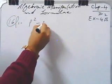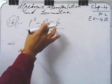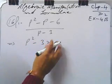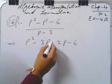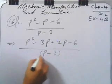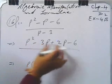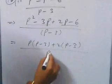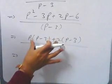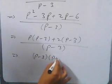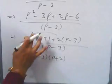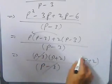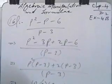Question number 16: (p² - p - 6) divided by (p - 3). Factorize the quadratic p² - p - 6. We need two numbers that multiply to -6 and add to -1, which gives -3 and +2. Factorizing gives (p - 3)(p + 2). The (p - 3) cancels, and your result is (p + 2).